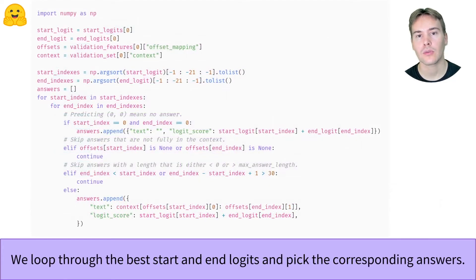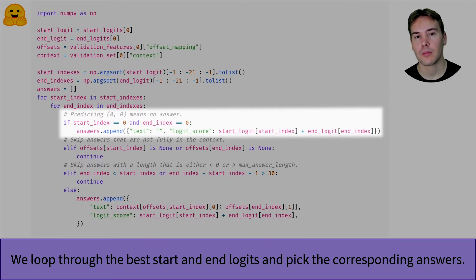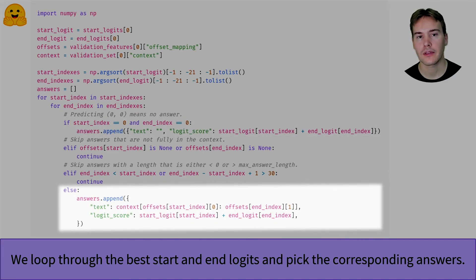To go fast, we don't look at all possible start and end logits, but the 20 best ones is enough. We ignore the logits that spawn impossible answers or answers that are too long. As we saw in the preprocessing, the labels 0, 0 correspond to a no answer. Otherwise, we use the offsets to get the answer inside the context.